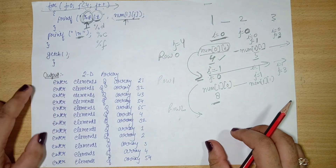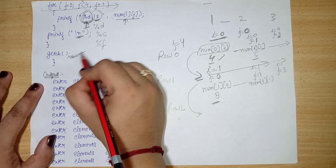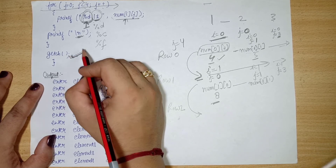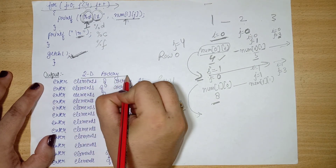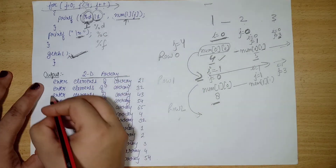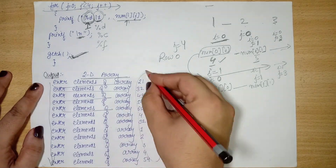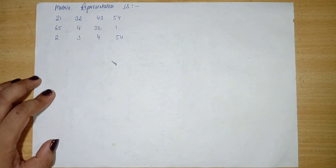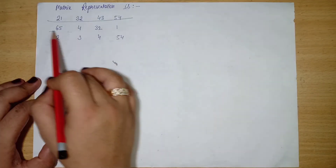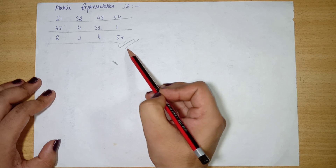We run the program and the output is displayed on the screen. The screen holds until we press a key (getch). First the input prompts appear, we enter all numbers through the keyboard, and then the matrix representation is displayed as I explained.